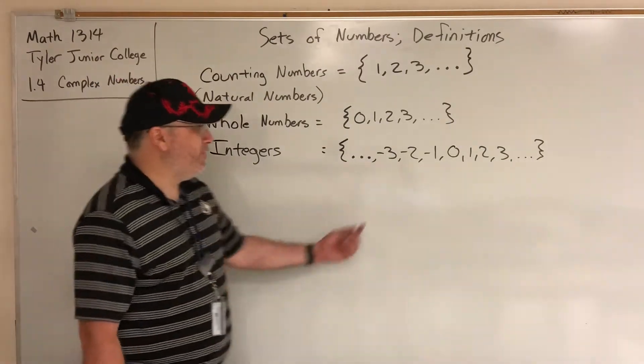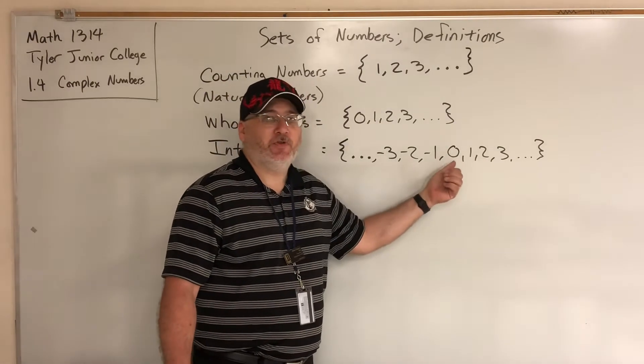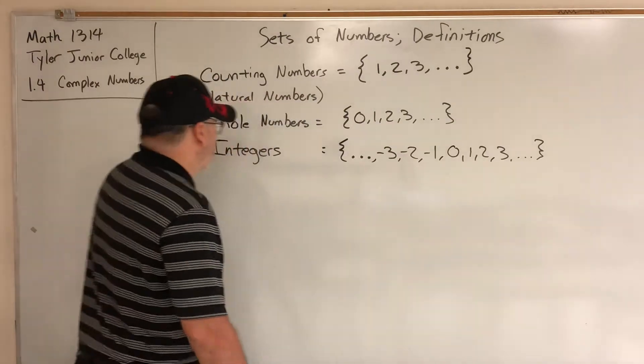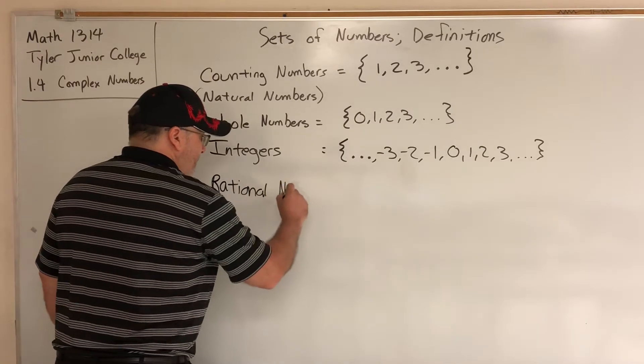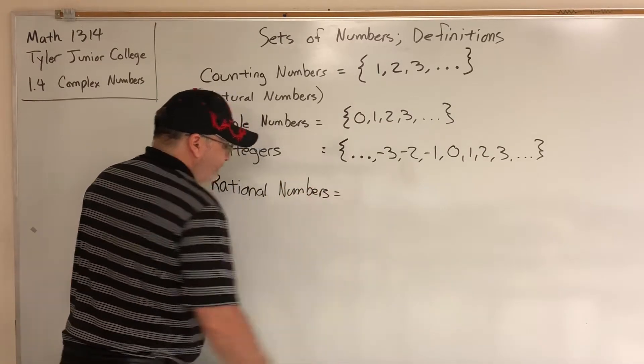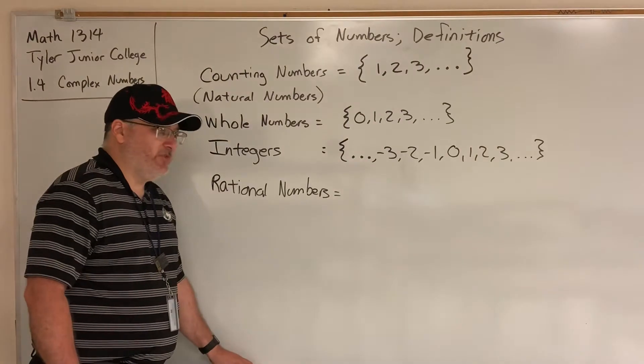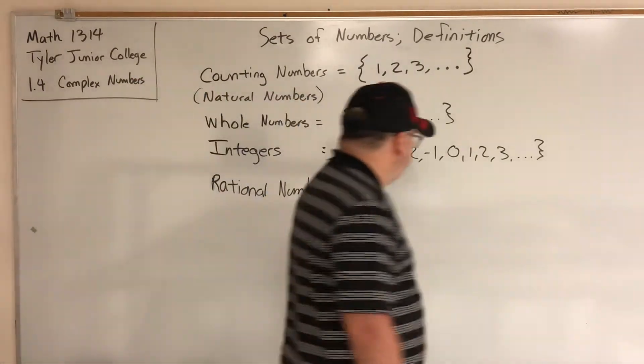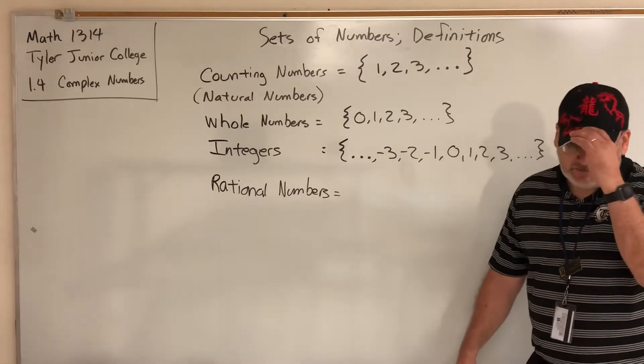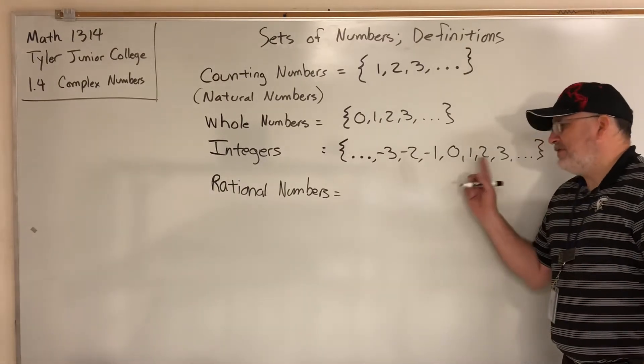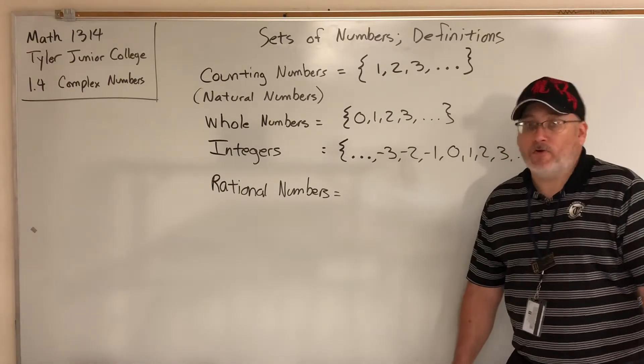We're still missing some values. Most of you know that there are many numbers between consecutive integers. For example, between zero and one, there are no more integers, but there are plenty of fractions and decimals, which brings us to our next set of numbers called the rational numbers. The rational numbers—they're not impossible to list, but there's a property of rational numbers that makes them difficult to list. Think of a number between zero and one. You're probably thinking one-half, unless you're trying to get cute and come up with something else.